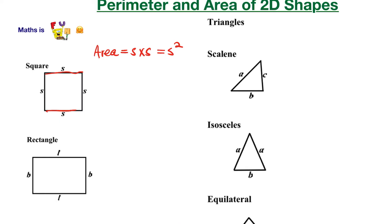Let's say this side is 2 meters. So the area will be 2 meters times 2 meters, which equals 4 meters squared. That's the area.